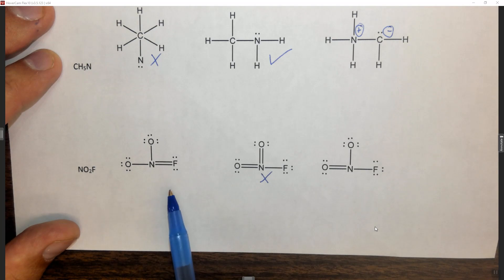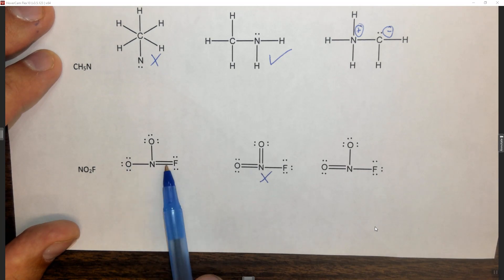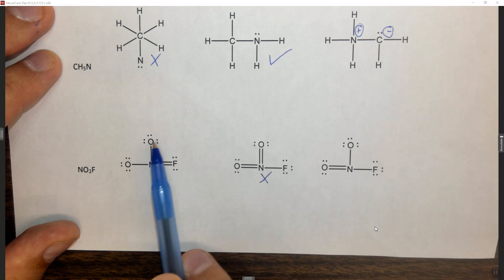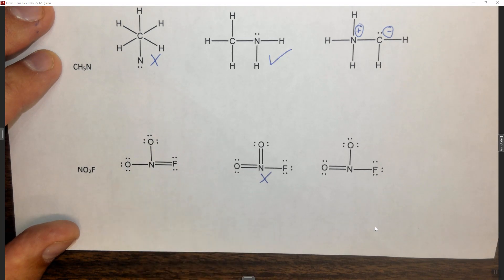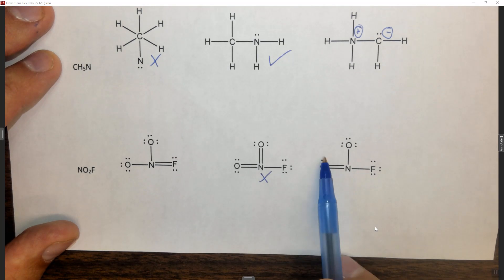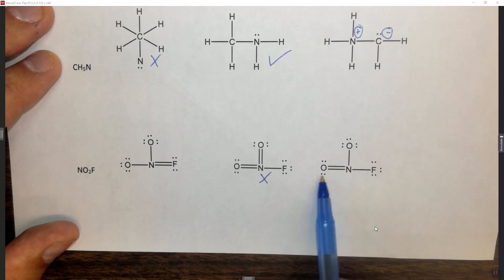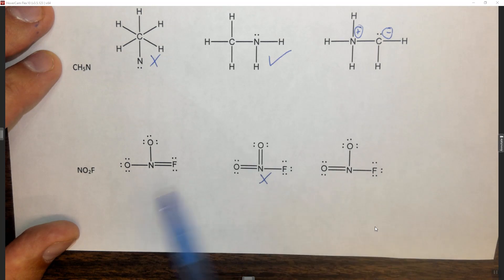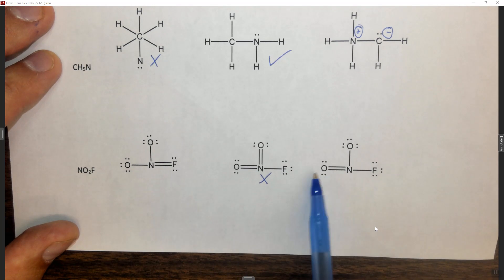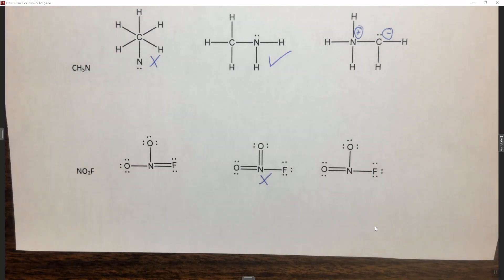Let's look at the next one. In this case we have two, four, six, eight around nitrogen, and two, four, six, eight around fluorine. This oxygen has eight and this oxygen has eight — this has all octets. How about this one? Two, four, six, eight around this oxygen, eight around this one, eight around this one, and two, four, six, eight around nitrogen. Similar to the previous example, these both have octets. So how are we going to tell? Exactly the same as before — by formal charges.